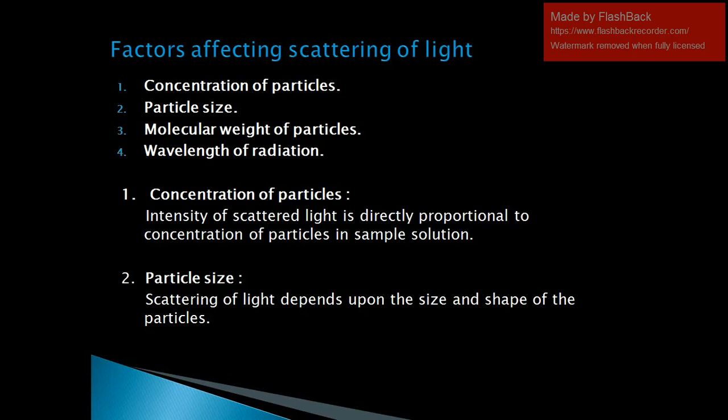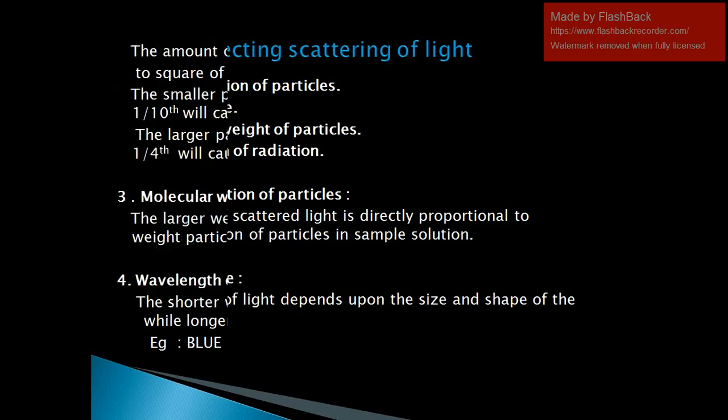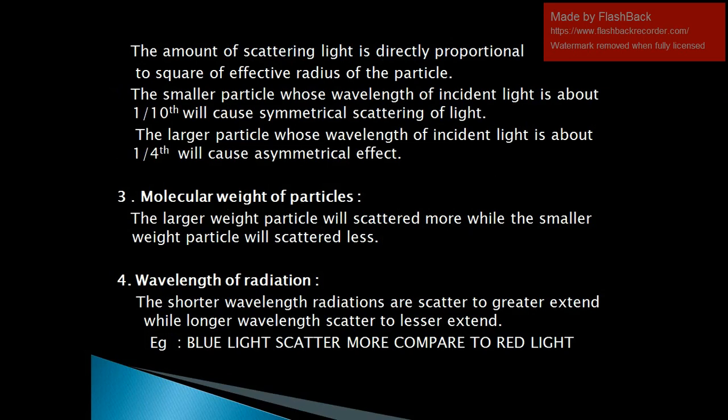The second factor affecting scattering of light is particle size. Scattering of light depends upon the size and shape of the particle. The amount of scattered light is directly proportional to the square of the effective radius of the particle. Smaller particles whose size is about 1/10th of the wavelength of incident light will cause symmetrical scattering, while larger particles whose size is about 1/4th of the wavelength will cause asymmetrical scattering.